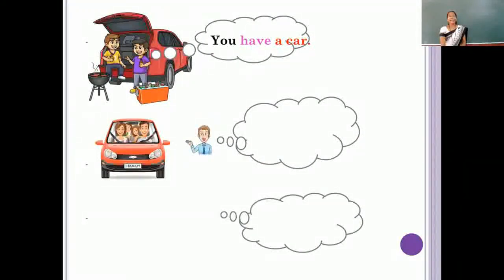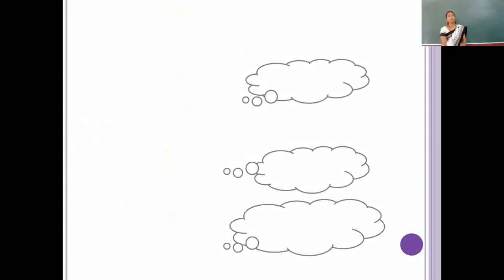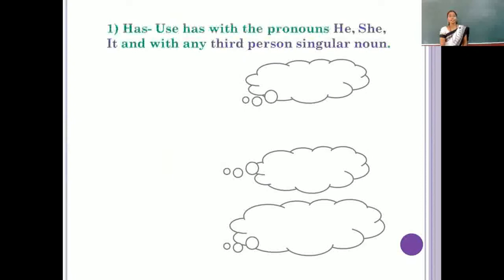Here, they have a car. And here, girls have a car. Girls is a plural noun. After that plural noun, we can use have verb to show the belonging.